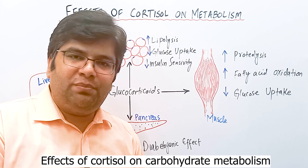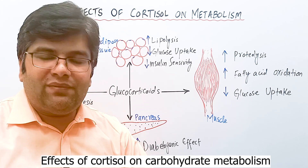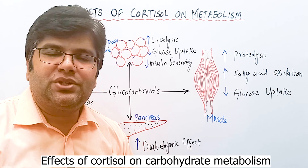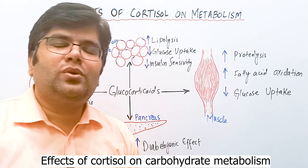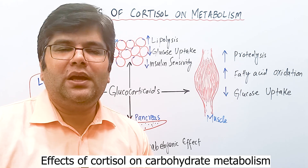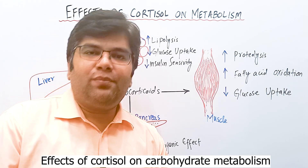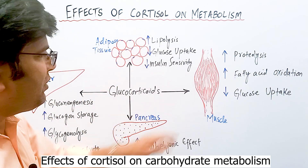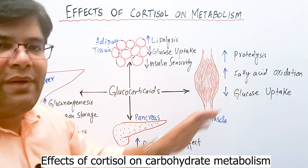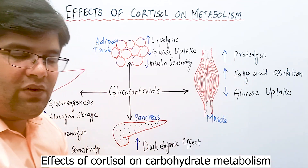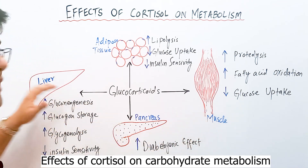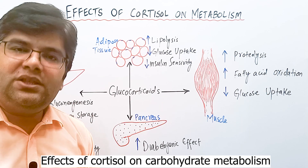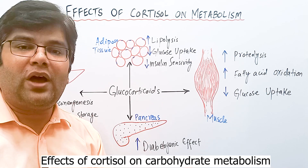Between meals, glucose is not being absorbed, so blood glucose level decreases and glycogen stored in the liver depletes. To increase glucose during fasting or between meals, proteins are broken down in peripheral tissues, especially muscles. Amino acids are released into the blood and delivered to the liver, where they are converted into glucose — this is gluconeogenesis. In this way, blood glucose level rises and hyperglycemia occurs.